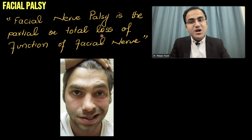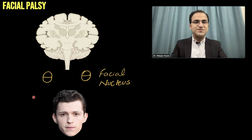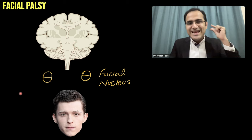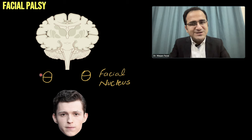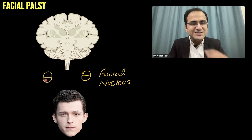Facial Nerve Palsy is partial or total loss of function of the Facial Nerve. We divide the face into two halves: the upper half and the lower half. There is a Facial Nerve Nucleus lying in the brain stem, and that nucleus is also divided into upper and lower halves. The upper half supplies the upper half of the face, and the lower half supplies the lower half of the face.